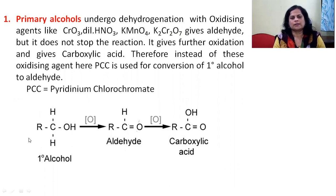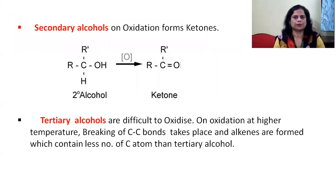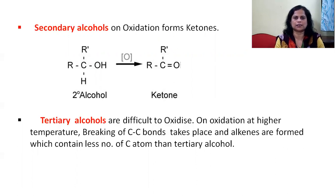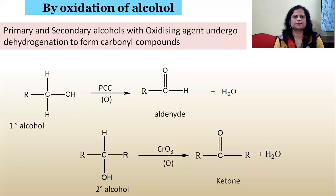For secondary alcohols, on oxidation they form ketones. So primary alcohols form aldehydes, secondary form ketones. In case of tertiary alcohols, they are very difficult to oxidize. On oxidation at higher temperature, breaking of carbon-carbon bond takes place and alkenes are formed. The products from tertiary alcohols require a stronger oxidizing agent and contain fewer carbon atoms than the tertiary alcohol, making them difficult to oxidize.